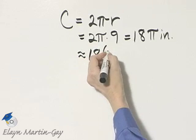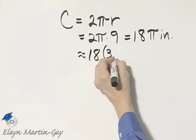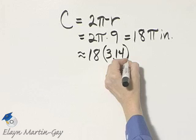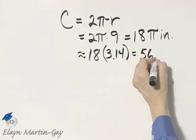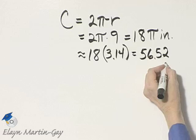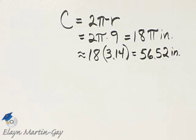We do want to approximate though. So instead of pi, I'll write down an approximation, 3 and 14 hundredths. And that is equal to 56 and 52 hundredths. And that is, don't forget, in inches.